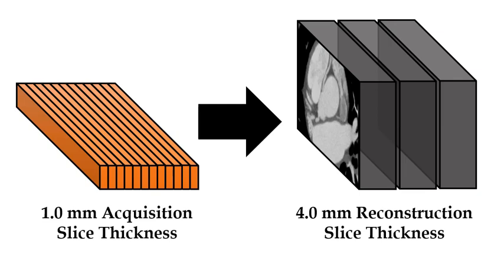So the acquisition thickness would be one millimeter, but the images would be displayed with a reconstruction slice thickness of four millimeters. In this case, the scanner would just average together the information of four detector rows to total four millimeters and display them as one slice on the screen.